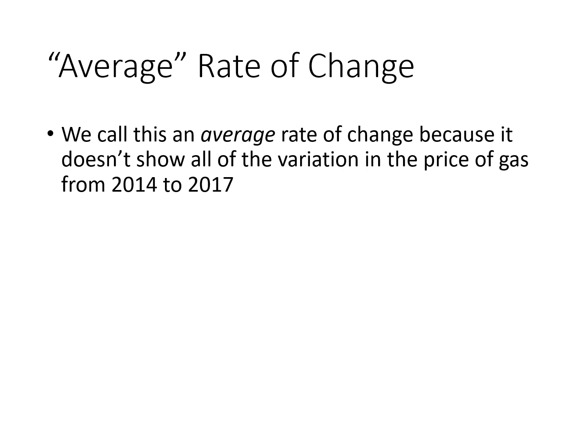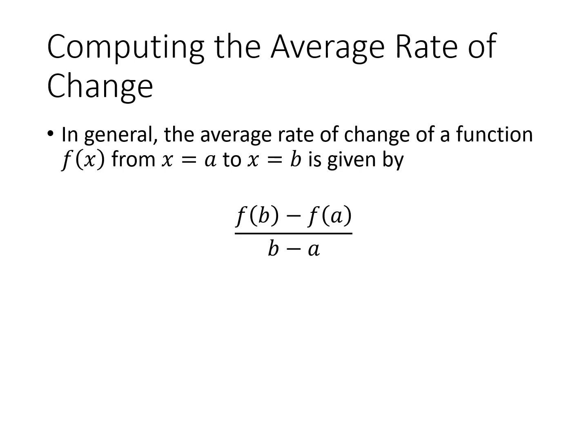That's called an average rate of change because it doesn't show all of the variation in the price of gas from 2014 to 2017. If you look back at that graph, it has a lot of ups and downs that aren't really captured by that single number, 0.04. The average rate of change is the change in y over the change in x — f(b) minus f(a) on top, and b minus a on the bottom. That's a change in x. Sometimes this is called rise over run, and if you're in a calculus class, you probably already know how to find the slope of a line.